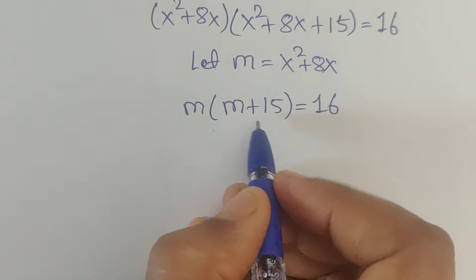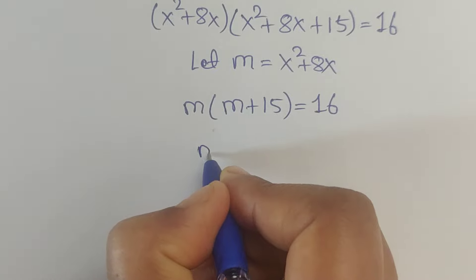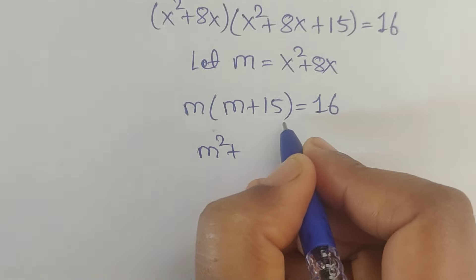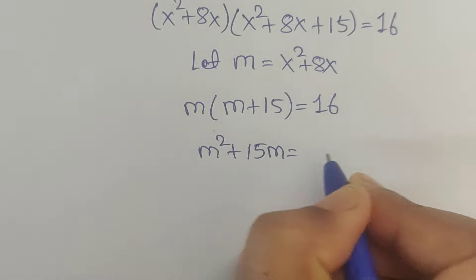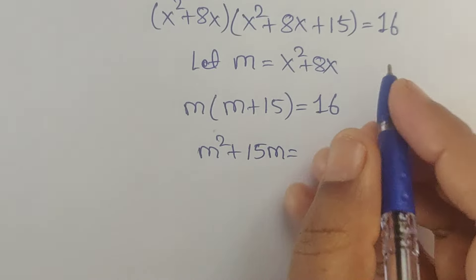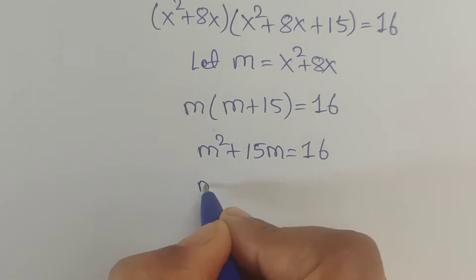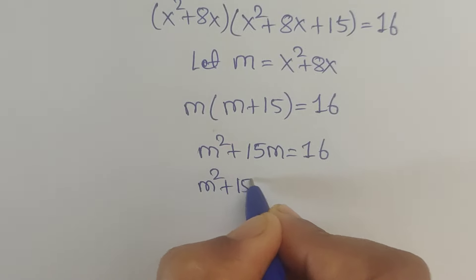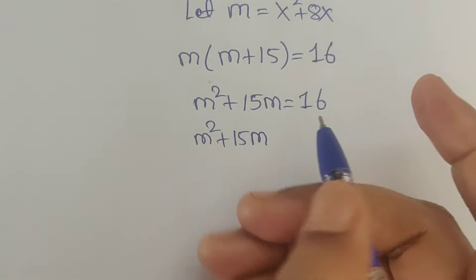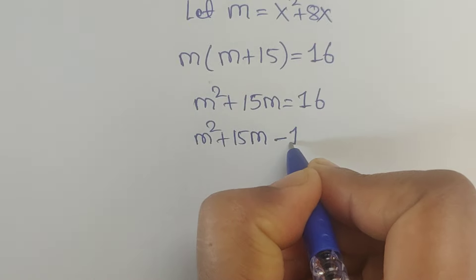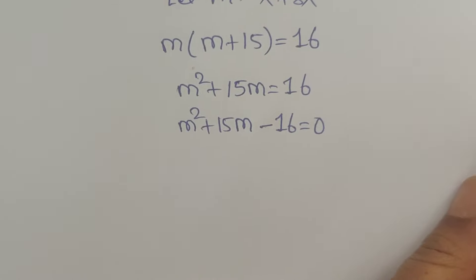Now multiply these two terms. We get m times m, which is m squared, plus m times 15, which is 15m, equals 16. So m squared plus 15m. Writing the 16 to the left side, it becomes minus 16, giving m squared plus 15m minus 16 equals 0.